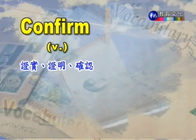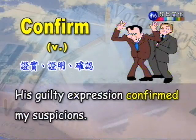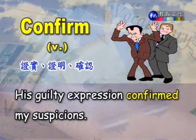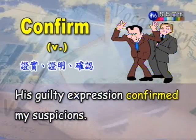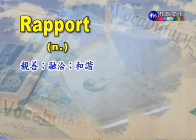下面一个字是confirm，动词，证实、证明、确认。例句：His guilty expression confirmed my suspicions. 他感到内疚的那个表情证实了我对他的猜疑。再往下看，rapport，名词，亲善、融洽、和谐。